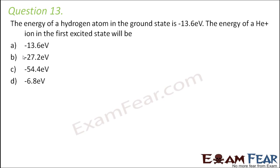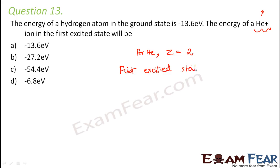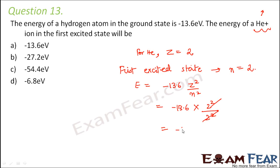Question number 13: The energy of a hydrogen atom in the ground state is −13.6 eV. The energy of a helium ion in the first excited state will be. Helium is a hydrogen-like atom with atomic number Z = 2. The first excited state corresponds to n = 2. So energy = −13.6 × Z²/n² = −13.6 × 4/4 = −13.6 eV.